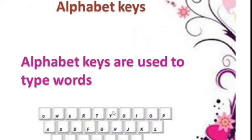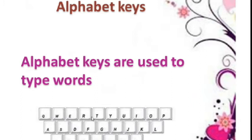What is the use of alphabet keys? Alphabet keys are used to type words. Keys labelled with English alphabet are called alphabet keys. What do you mean by alphabet? Letters. So the keys labelled with English letters, or the keys labelled with A to Z, are called alphabet keys.